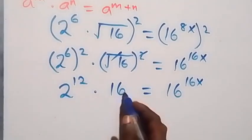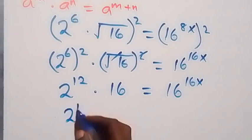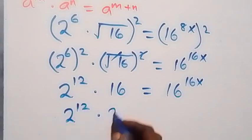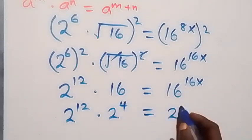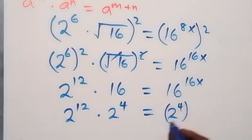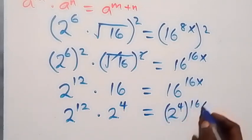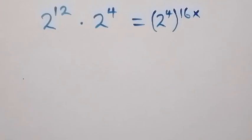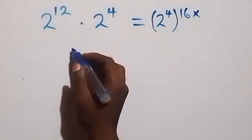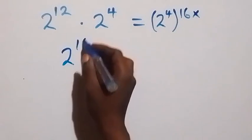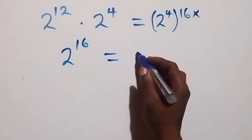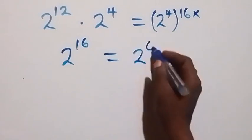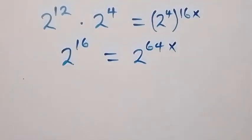Here 16 is 2 raised to power 4, so we have 2 raised to power 12 times 2 raised to power 4. From the law of indices we add the powers: 12 plus 4 gives us 2 raised to power 16. That equals 16 raised to power 16x. Applying the power law further, this power multiplies and we arrive at 2 raised to power 64x.